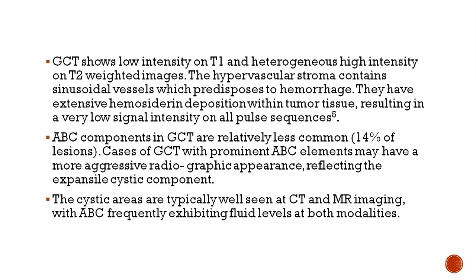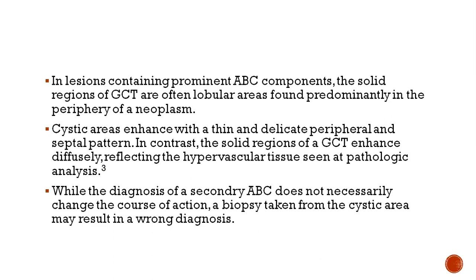The ABC component in GCT is not relatively common, as given in the literature — it is seen in up to 14% of cases. Cases of GCT with a prominent ABC element may have a slightly more aggressive appearance on radiograph, reflecting the expansive cystic component. Cystic areas are typically well seen on CT and MR imaging, with ABC showing multiple fluid-fluid levels in both modalities. In lesions with a prominent ABC component, the solid regions of the GCT are often lobular areas found predominantly in the periphery, while the cystic areas are towards the center. The cystic areas enhance with a thin and delicate peripheral and septate pattern, while the solid part of the GCT enhances diffusely, reflecting the hypervascular tissue confirmed in pathological analysis.